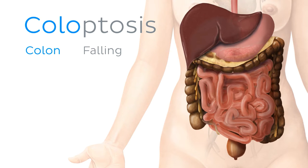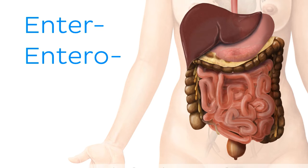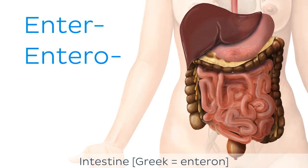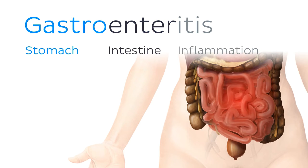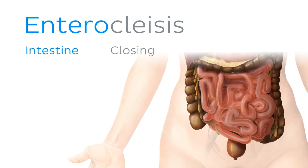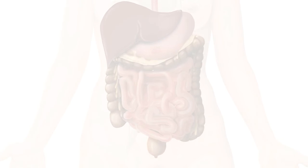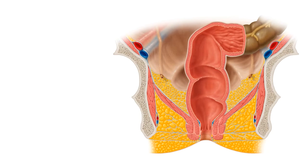On the topic of the intestines, a common root word which you might not be familiar with is 'enter' or 'entero', which comes from the Greek word for this part of the digestive tract. The most common example you'll probably hear of this is gastroenteritis, which is inflammation of the stomach and intestine, which often causes vomiting. Or enteroclysis, which is a blockage or occlusion of the intestine. You'll also see this root word appearing in the adjectives enteral or enteric.